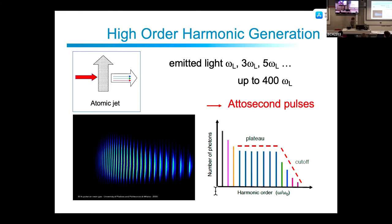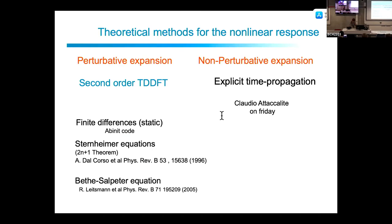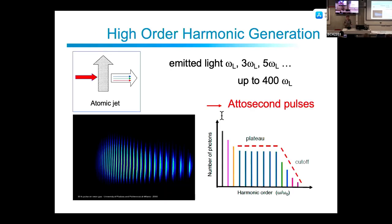The HHG spectrum showed a characteristic shape: an initial fast decrease in harmonic intensity, then a plateau where all harmonics are emitted at roughly the same intensity, followed by a sharp cutoff. The plateau clearly shows that the system is no longer in the perturbative regime — in perturbation theory the response decreases as a power of the field, but here everything is at the same level.